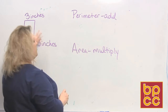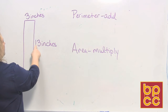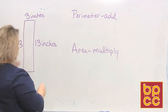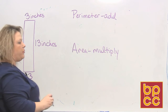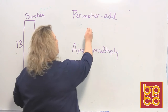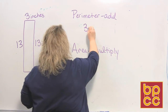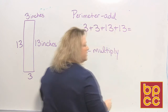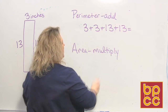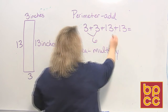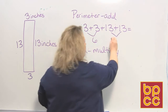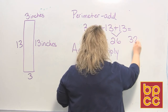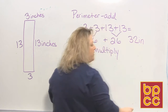Because this is a rectangle, we know that if the long side is 13 inches, the opposite side is also 13 inches. If the short side is 3, then the other short side is also 3. For perimeter, all we do is add the four sides together: 3 plus 3 plus 13 plus 13. That gives us 3 plus 3 equals 6, and 13 plus 13 equals 26, for a total of 32 inches. Always put the unit of measurement at the end.